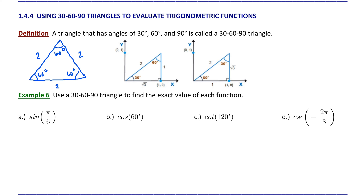So we've got three 60-degree angles and three sides of length 2. Now if we construct an altitude from this vertex perpendicular to the opposing side, then we have two right triangles. This altitude bisects the angle at the top, creating two equal 30-degree angles. It also bisects the length of the segment from the opposing side, making this length 1 and this length 1. Then we have a 30-60-90 triangle on the left and a 30-60-90 triangle on the right.